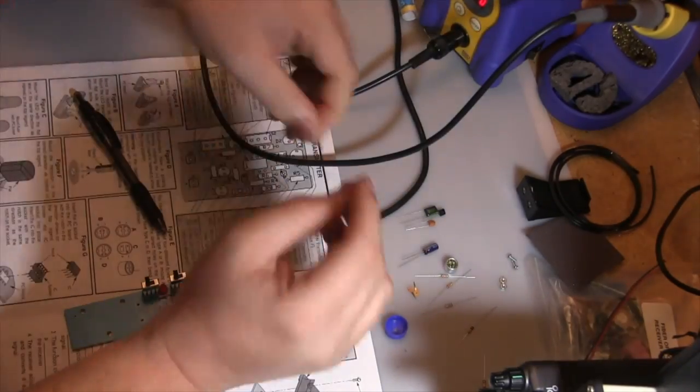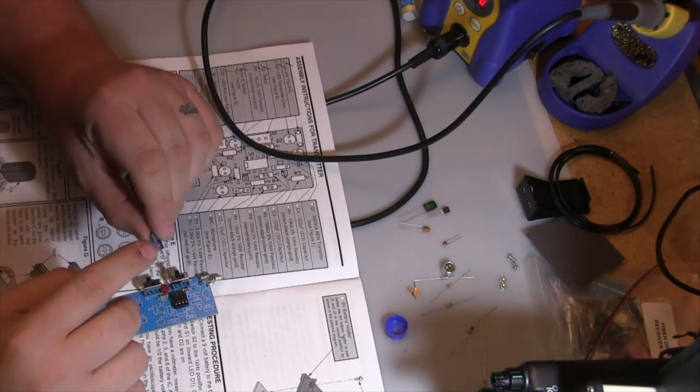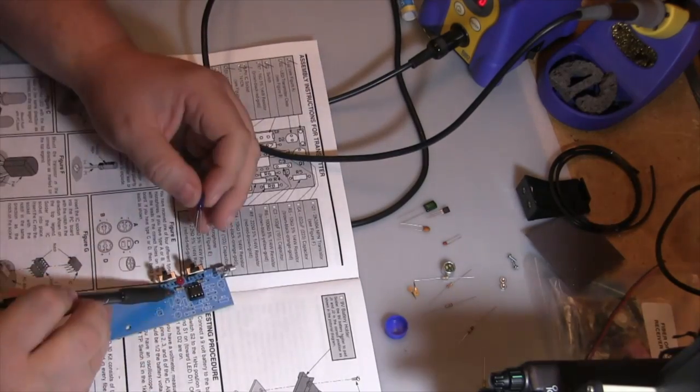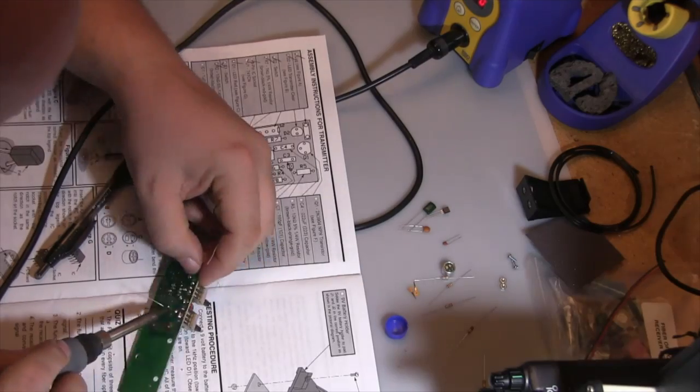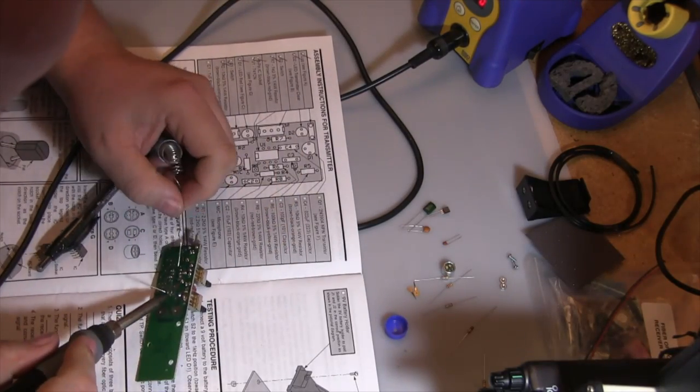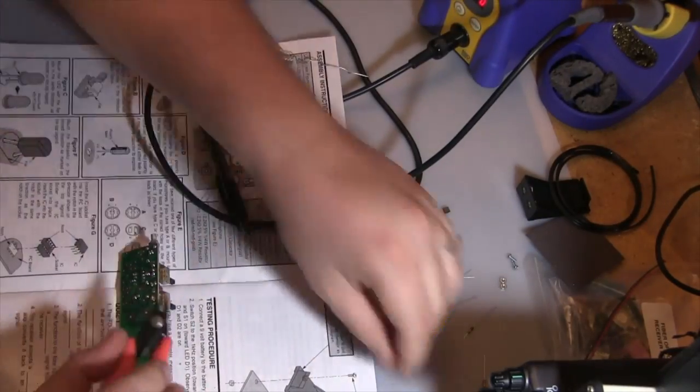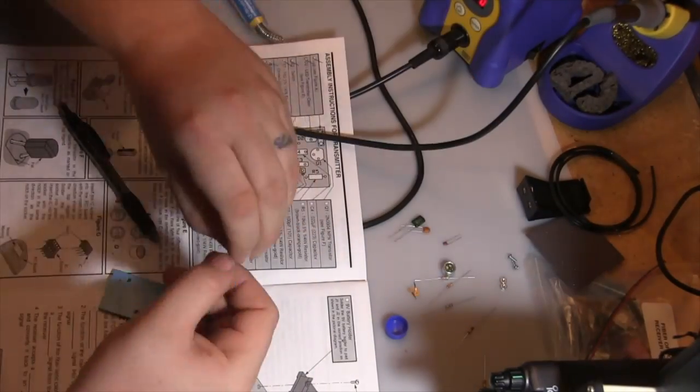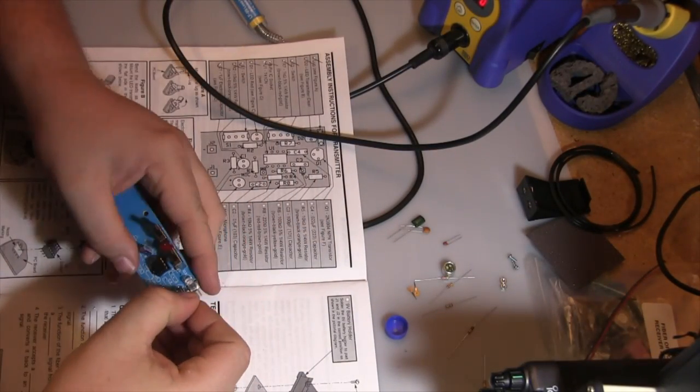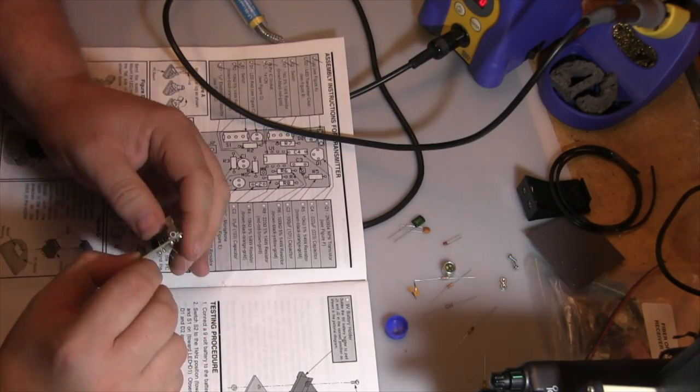Now it's time for the electrolytic capacitor. The electrolytic capacitor is polarized, so you must make sure you get it placed in the circuit board the correct way. Bad things can happen if you don't. You can look up reverse polarity capacitors to see what happens—not a pretty sight.